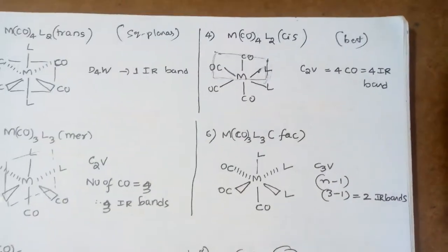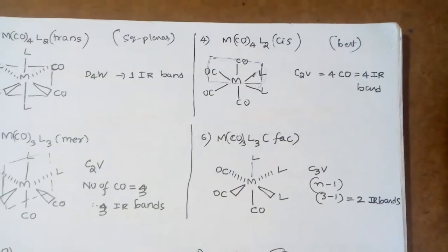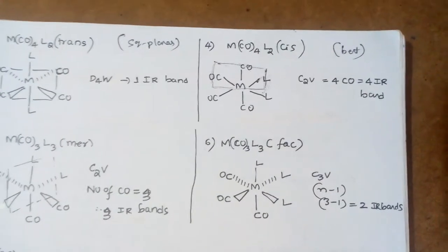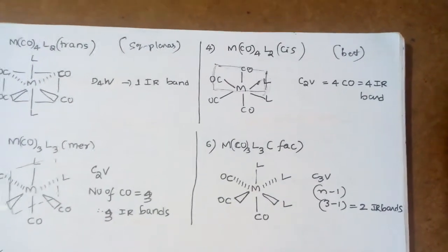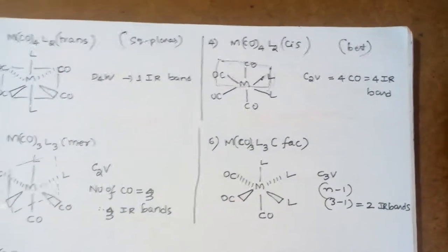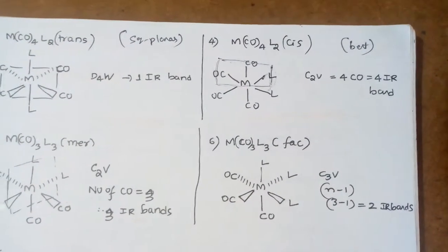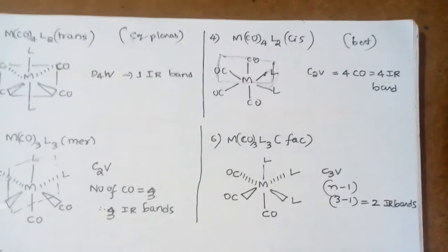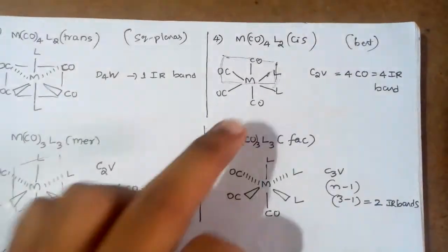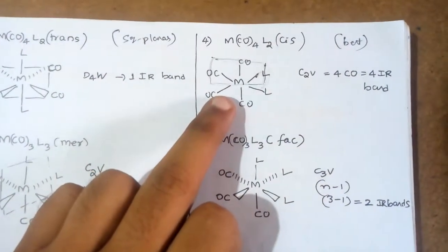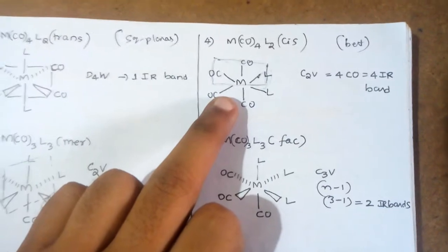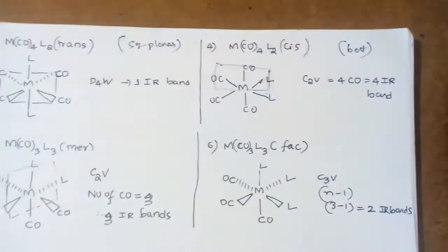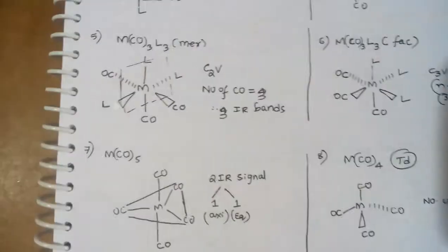For MCO4L2, it's a cis complex. Its point group is C2V. For C2V, number of carbonyl groups equals number of IR bands. Therefore, here we are having four CO groups, so we are having four IR bands.